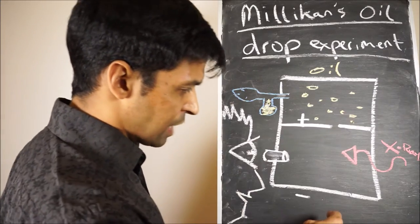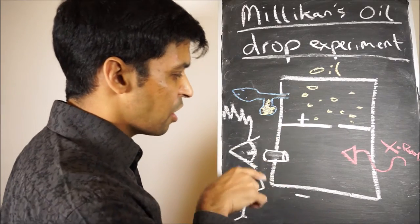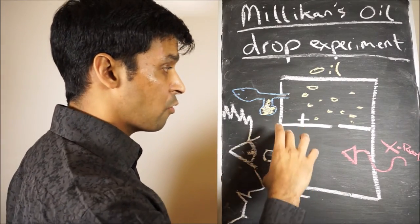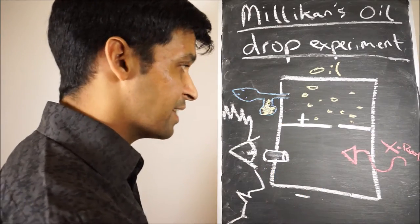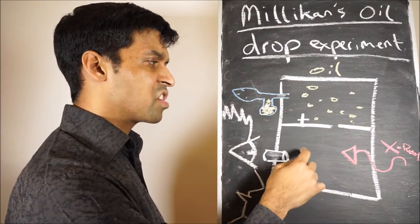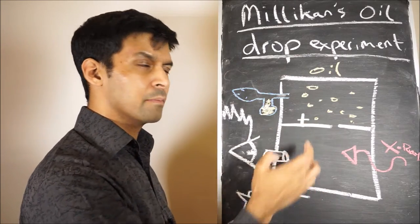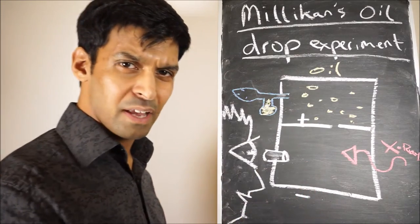Normally it'd fall down to the bottom, but if you turn on the electric current - so you've got a positive plate here and a negative plate - because these things are negatively charged, you can attract them towards a positively charged plate.